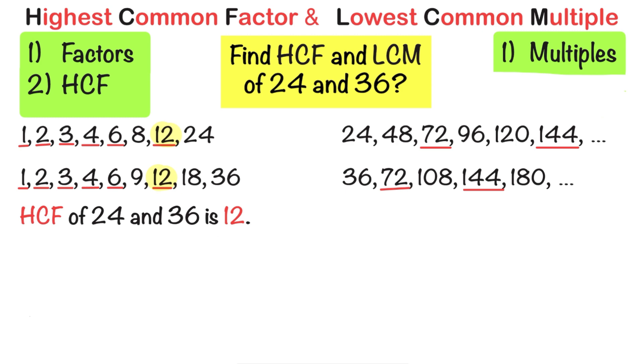The first one they share is 72. So the lowest common multiple of 24 and 36 is 72. This means 72 is the smallest number that appears in both times tables.